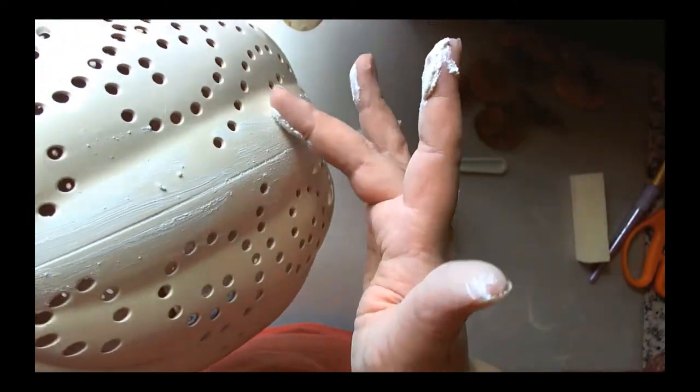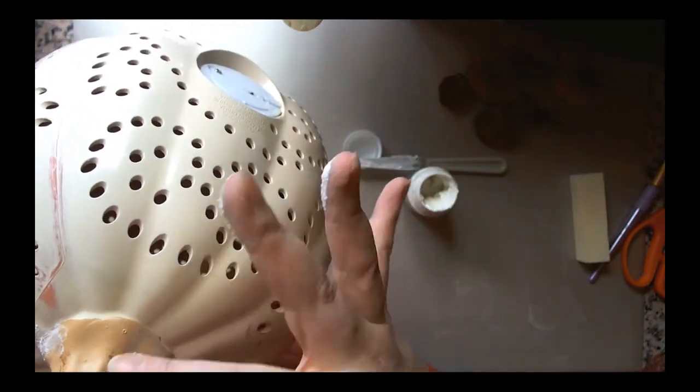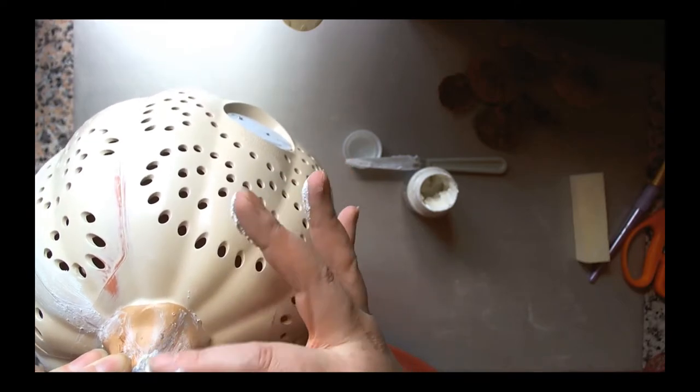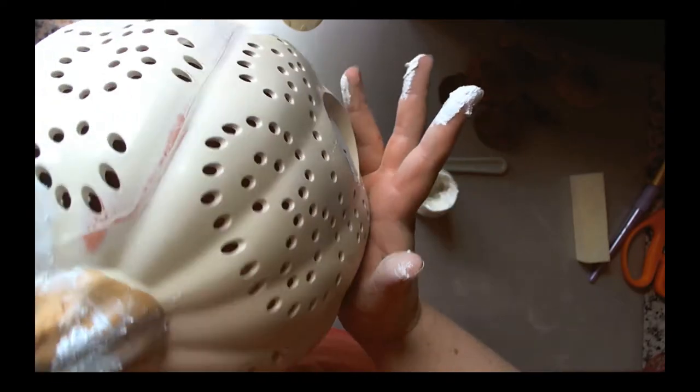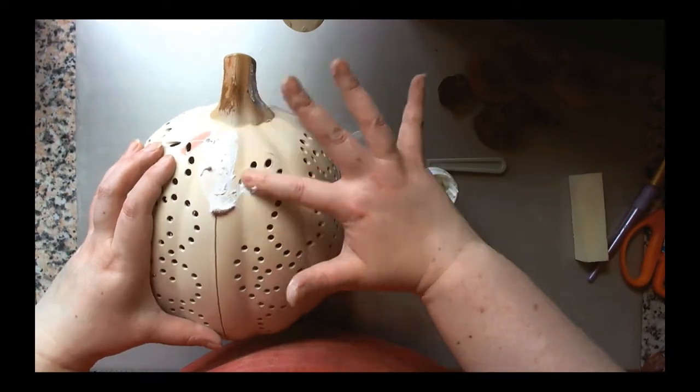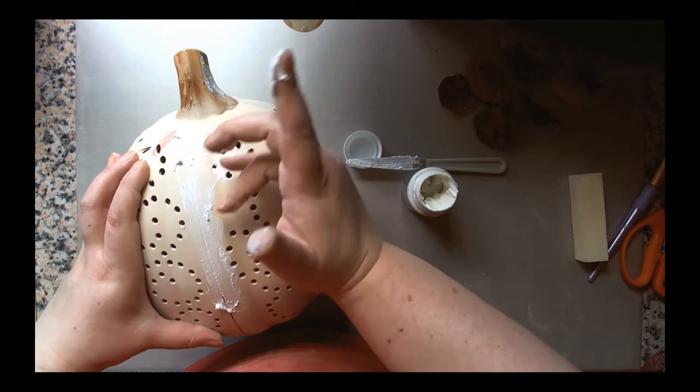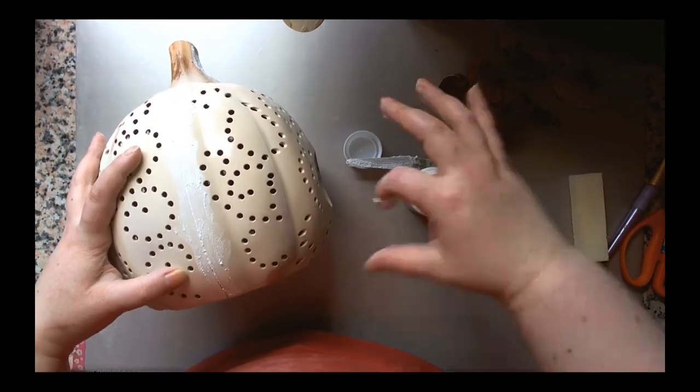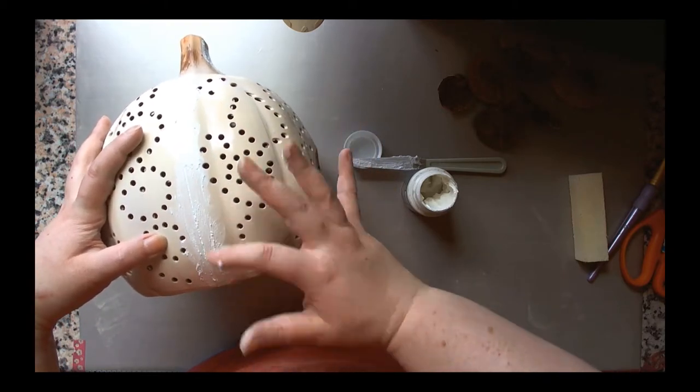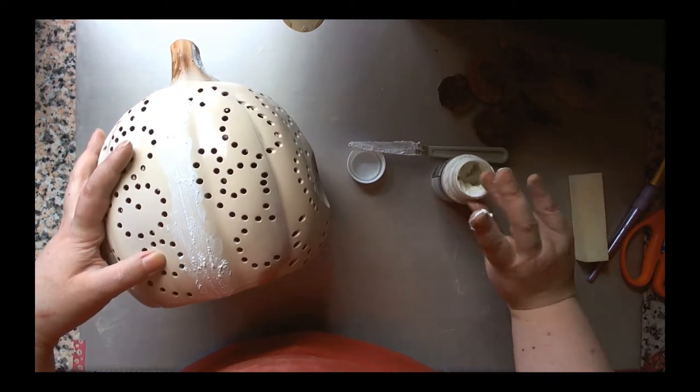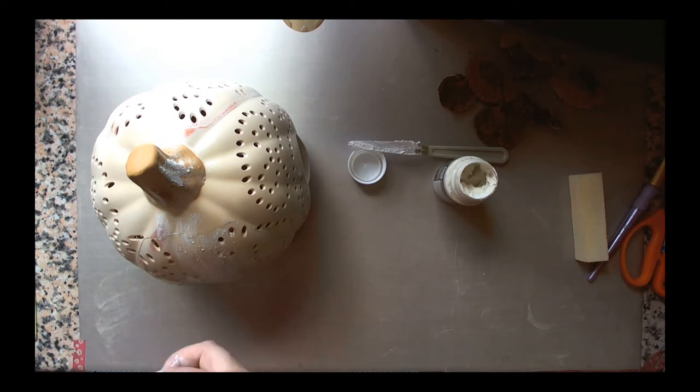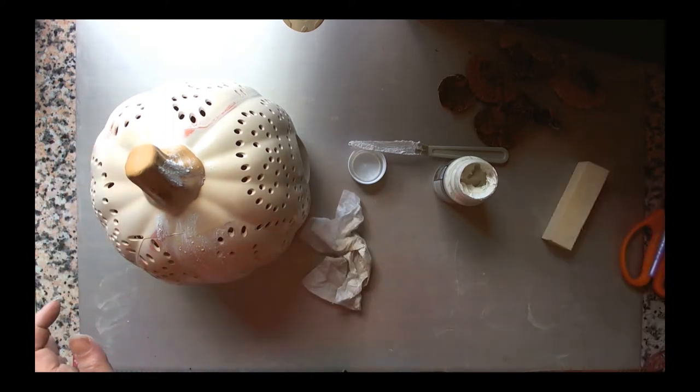At some point this piece was originally orange because when you sand it back you can see the orange coming through. But as you saw from the beginning shots, I decided to leave this pumpkin pretty much cream and go for a shabby chic look. It doesn't get altered that much in the grand scheme of things. It looks a lot better because it's mattified down and doesn't look like plastic anymore. I didn't want it to look like a cheap plastic model.